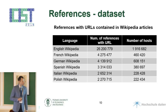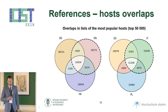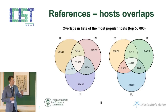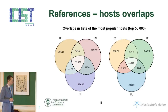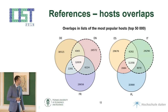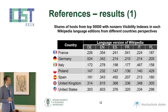If we choose the most popular hosts in each language, we are talking about the 5,000 most important hosts. We can see that there are some overlaps between these language versions, but most of the references are specific to a concrete language version. When we analyze these most popular hosts with the SISTRIX tool, which gives different indicators...